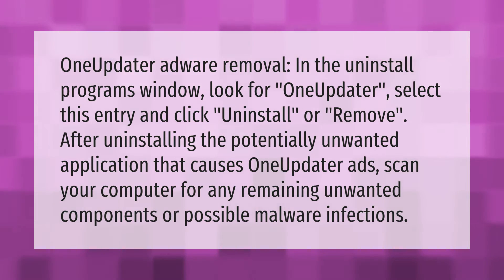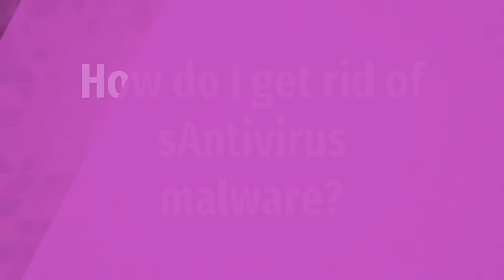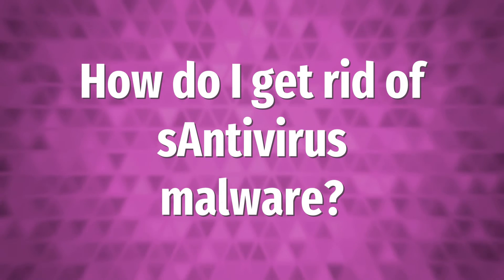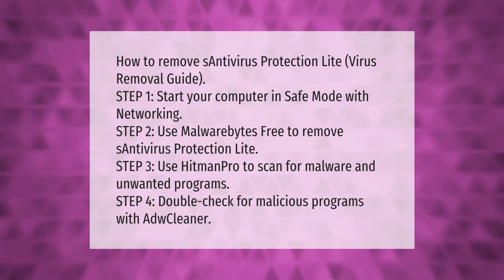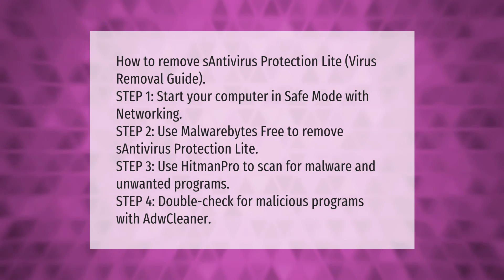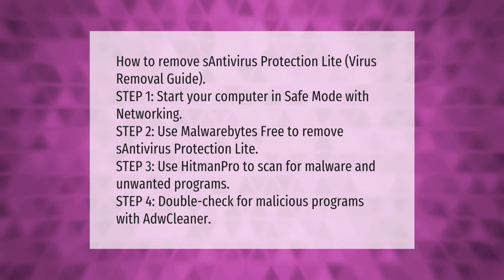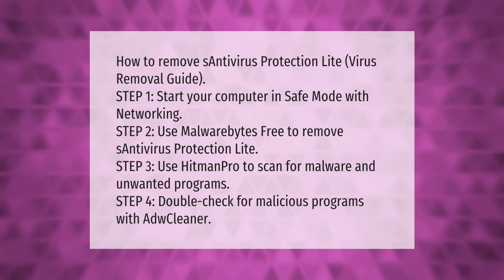How to remove S Antivirus Protection Light — virus removal guide. Step 1: start your computer in Safe Mode with Networking. Step 2: use Malwarebytes Free to remove S Antivirus Protection Light. Step 3: use HitmanPro to scan for malware and unwanted programs. Step 4: double-check for malicious programs with ADWCleaner.